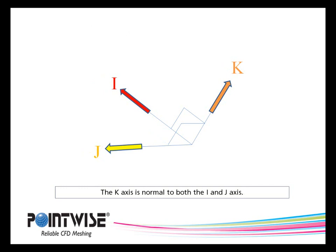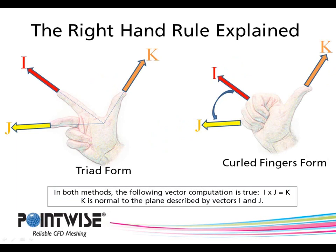There are two ways to visualize the right-hand rule. The first is what I call the triad. Now, take your right hand, sometimes called your starboard hand, and orient it in this fashion. The index finger points in the positive i direction. The middle finger points to the positive j direction. And the thumb, which is actually the cross product of both the i and j directions, points in the positive k direction.